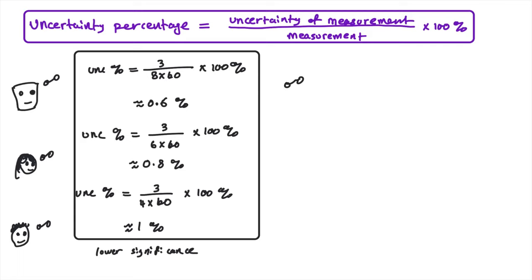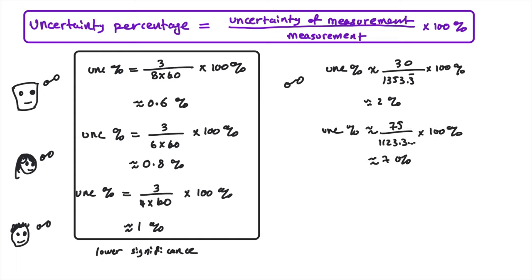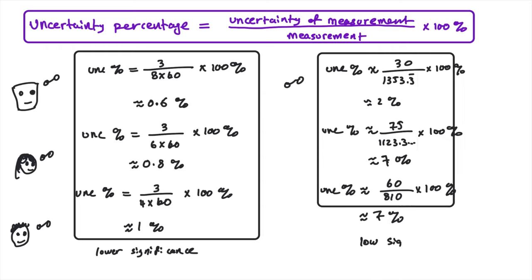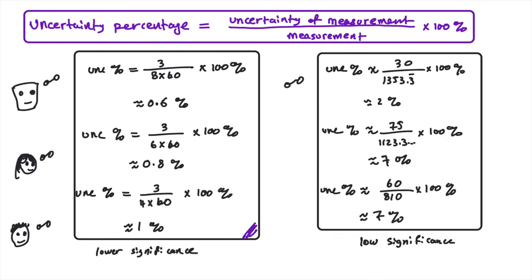The students then calculated the percentage uncertainty for their position. For Robo, the uncertainty was 30 meters and the measured value was 1353.3 repeating meters. Dividing and multiplying by 100% gave approximately 2% percentage uncertainty. Negda and Baba both got approximately 7%, which is low but still significant and should be included. Mr. S noted that position error bars go in the vertical direction and time error bars go in the horizontal direction.